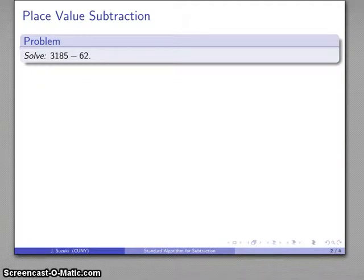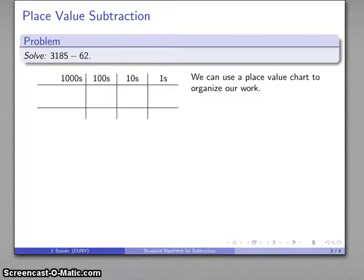So let's do this subtraction 3,185 minus 62. So we'll set up a place value chart to organize our work. So again, our places are the ones, the tens, the hundreds, the thousands.